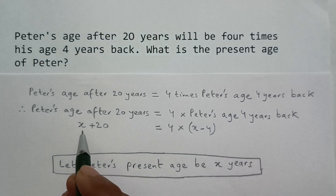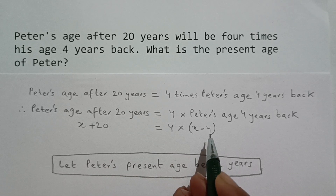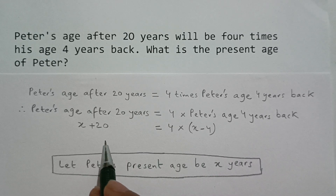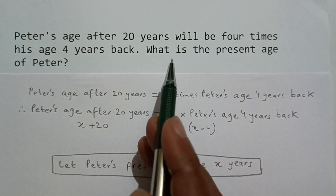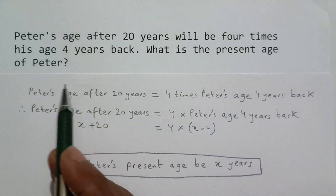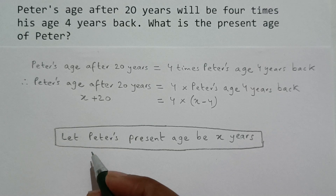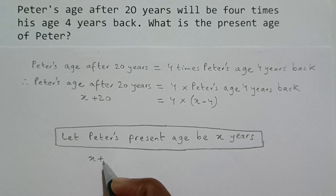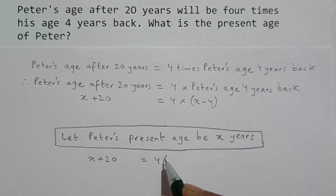So now the equation becomes X plus 20 is equal to 4 multiplied by X minus 4. If we solve this equation, we will get the value of X, and X is nothing but Peter's present age, which is what we have to find. So now we have to solve this equation: X plus 20 equals 4 multiplied by X minus 4.